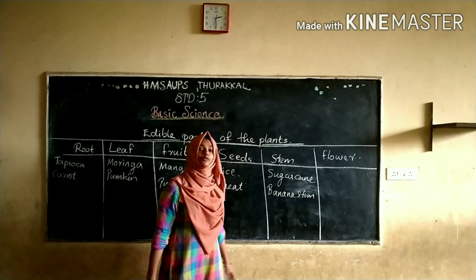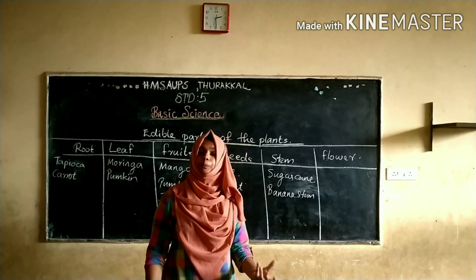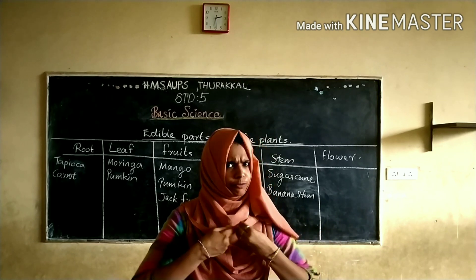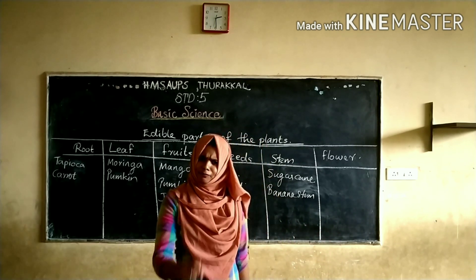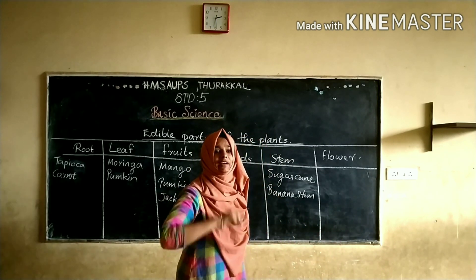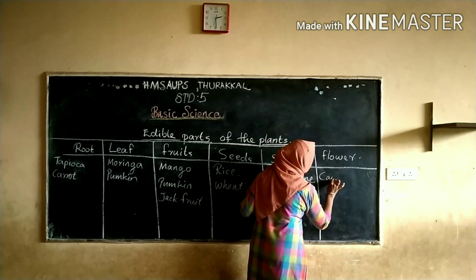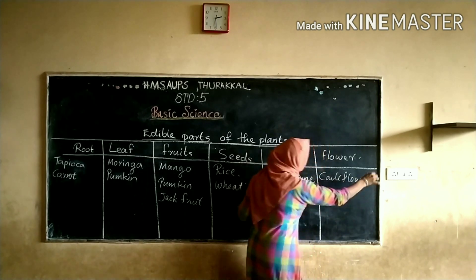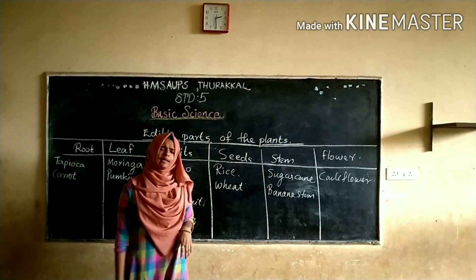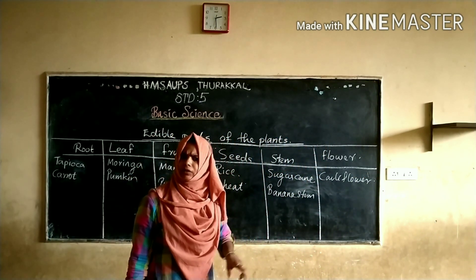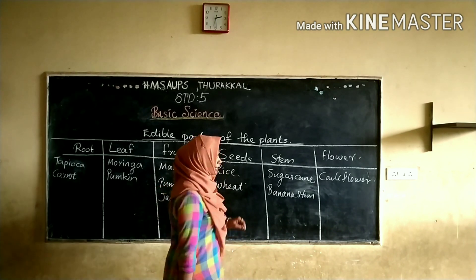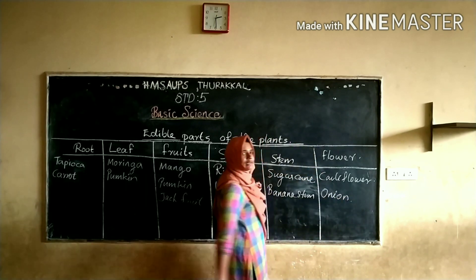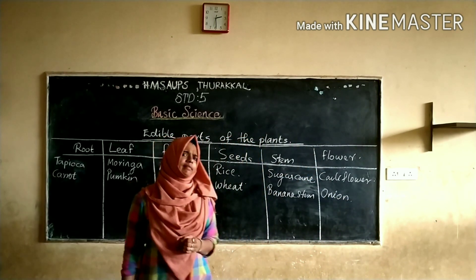Then what about flower? Which plant stores food in the flower for us? Very good. Cauliflower. Cauliflower. Then another example of flower — onion. Onion flower. We can eat onion flower.